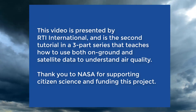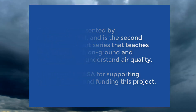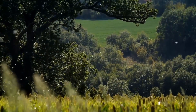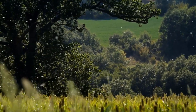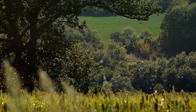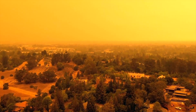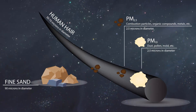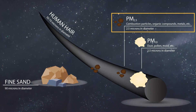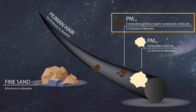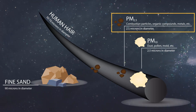Thank you to NASA for supporting citizen science and funding this project. Countless particles are suspended in our air at all times, including pollen from plants, emissions from motor vehicles and industry, as well as seasonal wildfires that produce smoke that can travel thousands of miles. These particles, particularly those around 2.5 micrometers in diameter and smaller, called PM2.5, can cause health problems when their concentration in the air gets too high.